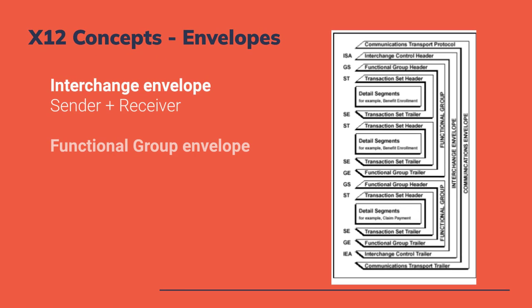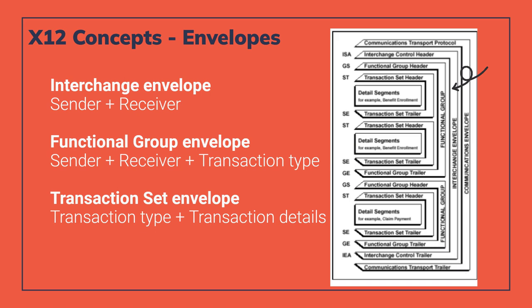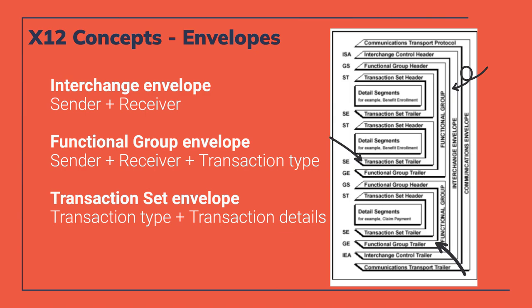For instance, the interchange envelope wraps the entire EDI transmission. Inside the interchange envelope, there are one or more functional group envelopes. And within each functional group, there are one or more transaction set envelopes. Let's explore these envelopes in more detail.